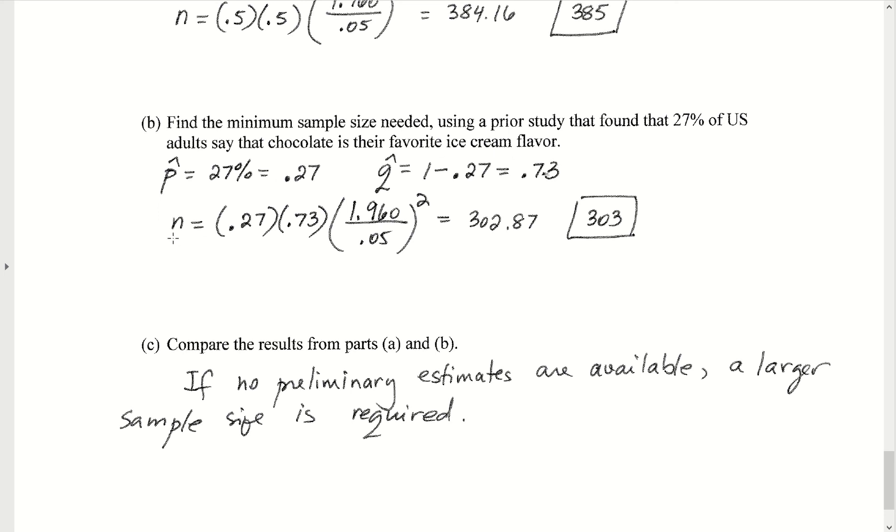And now we can plug that into our formula for N. N is equal to p-hat q-hat times the fraction ZC over E squared. We're still doing 95% confidence level, so the ZC is still 1.960. Same margin of error, 0.05. Don't forget that you have to square that fraction. And this would work out to be 302.87, which we would bump up to 303.